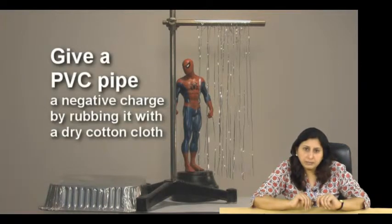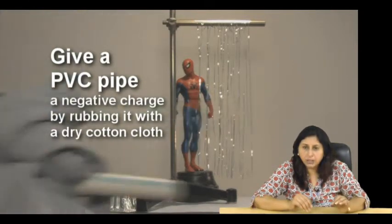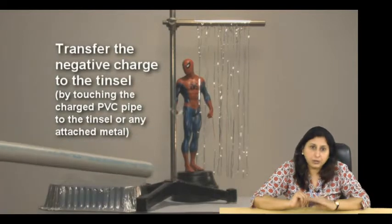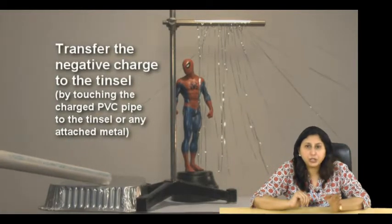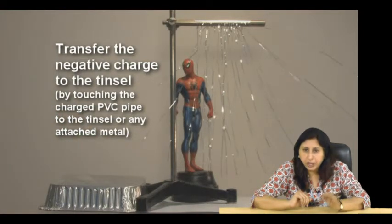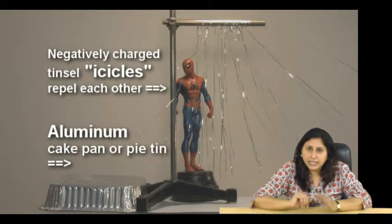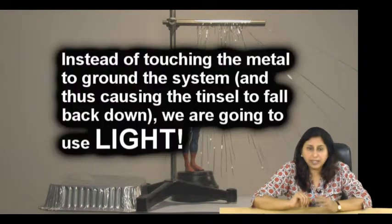Ground the system by touching the metal. Give a PVC pipe a negative charge by rubbing it with a dry cotton cloth. Now, transfer the negative charge to the tinsel by touching the charged PVC pipe to the tinsel or any attached metal. Negatively charged tinsel icicles repel each other.